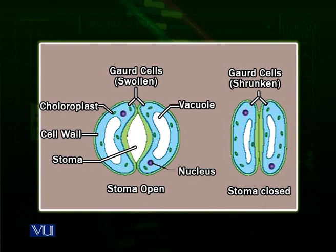Due to transpiration, when water goes out, a pressure is built up below the stomata in the leaf tissues, which results in movement of water from the xylem tissue towards the leaves. And this pressure goes down to the roots. Due to this pressure, water moves upward from the roots to the stem to the leaves and so on. So this is another mechanism for transport in plants.